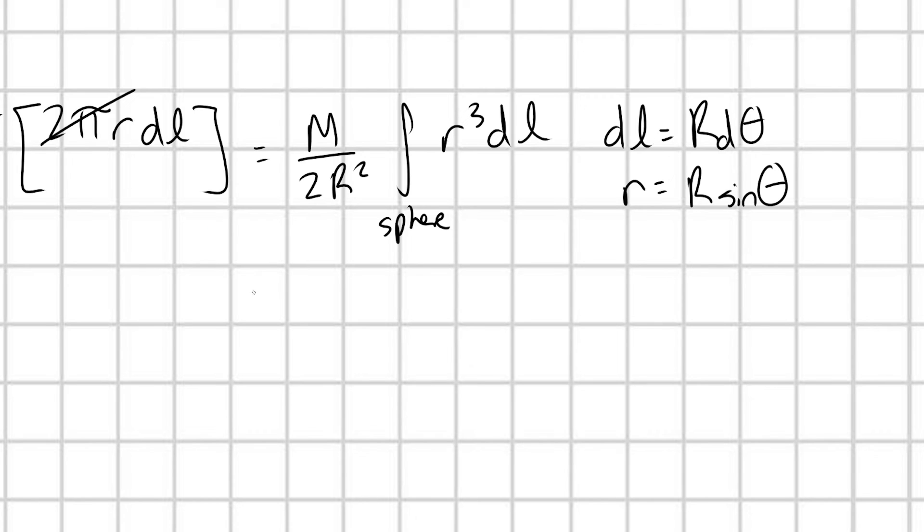Great, so I'm going to have m over 2r squared integral over my sphere of r cubed sine cubed theta times r d theta. Let's go ahead and get to canceling. Cool.